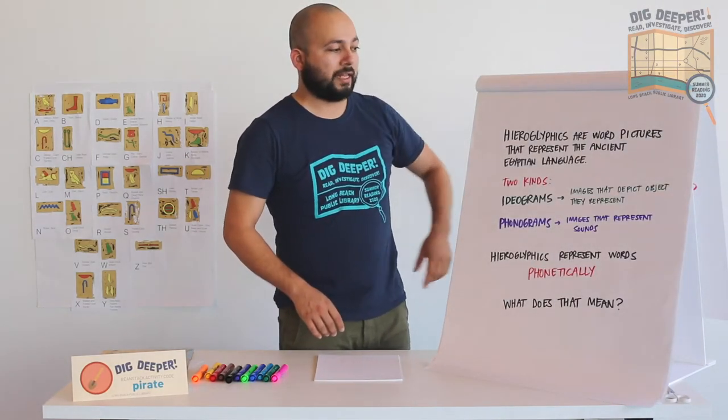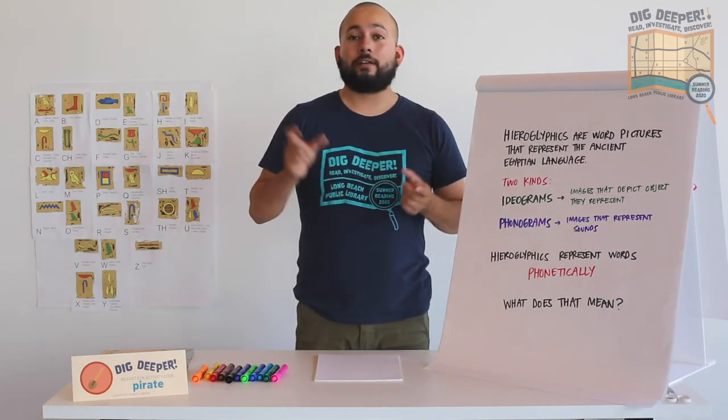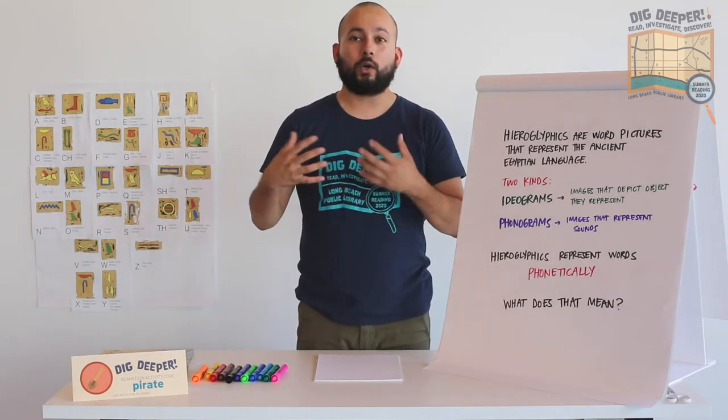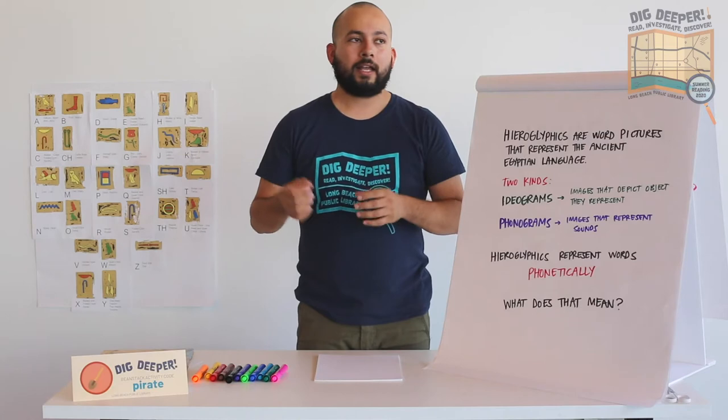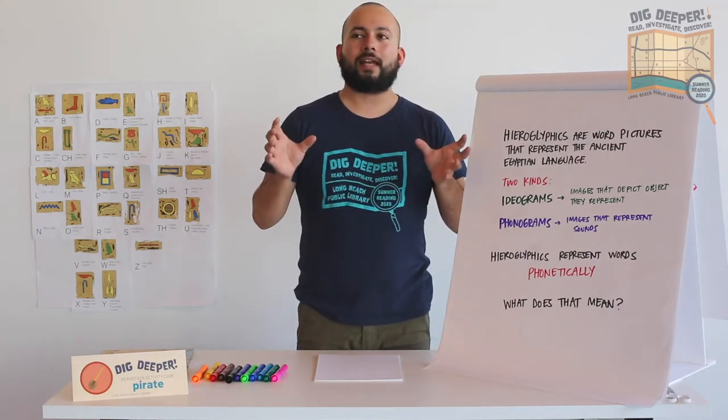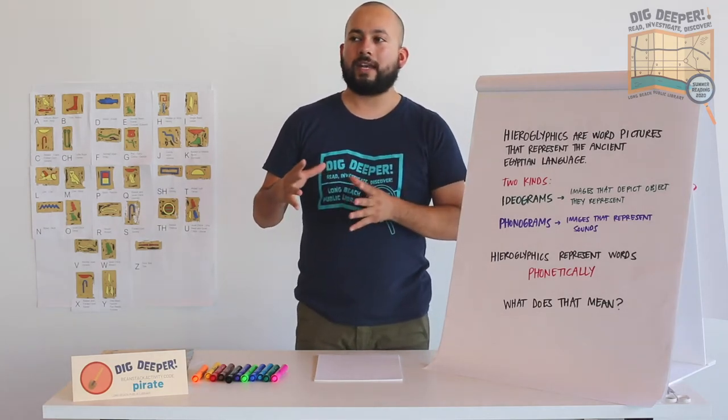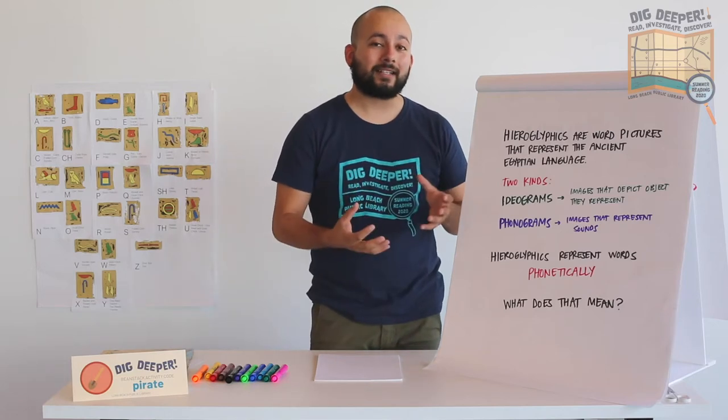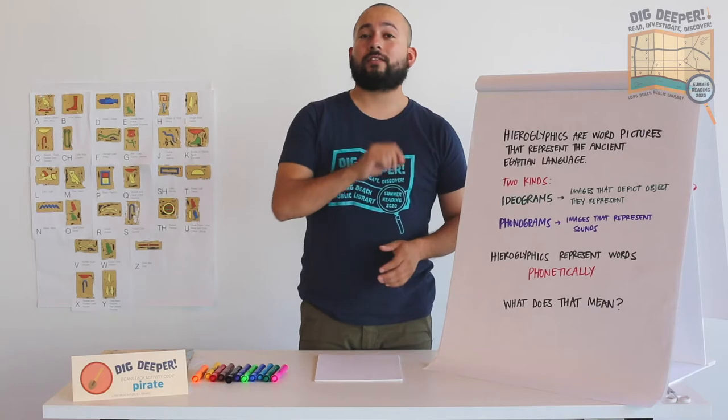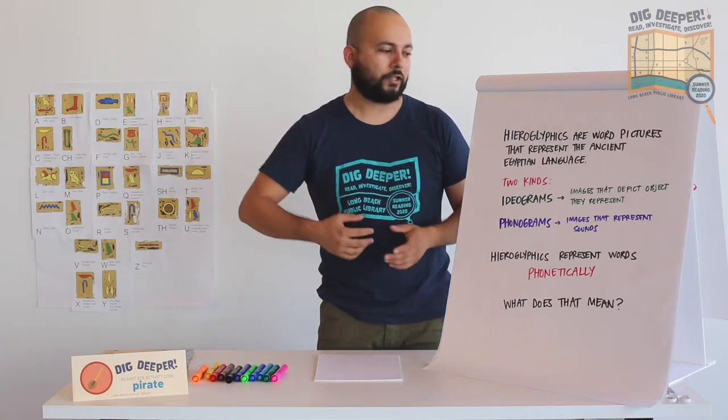Hieroglyphics are word pictures that represent the ancient Egyptian language. And the word itself, hieroglyphic or hieroglyph, comes from ancient Greek words, hieros, which means holy or sacred, and glyph, which means writing or symbol. So these are sacred symbols that the ancient Egyptians would use to mark the names of their pharaohs or magically protect royalty or important people. And they would actually oftentimes write out their magic itself in hieroglyphics too. So the symbols carried a lot of weight in ancient Egypt.